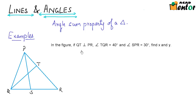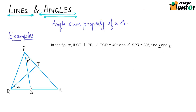In the figure, if QT is perpendicular to PR — that means this line QT is perpendicular to this line PR — and we are also given that angle TQR is equal to 40 degrees. Angle SPR is given to be 30 degrees. Then we have to find out the values of x and y. This one right here is y and this one here is x.